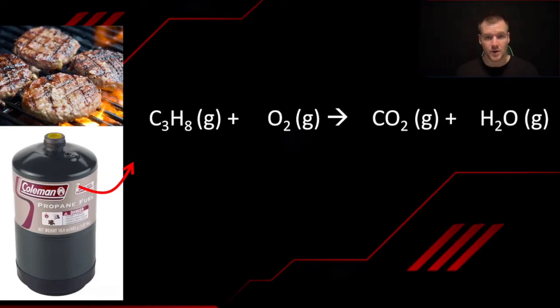But in this example as well, you see that we have three carbons at the start, only one at the end. We have eight hydrogens at the start and only two at the end. So we can see this is not balanced. So we're going to show you how to fix this.